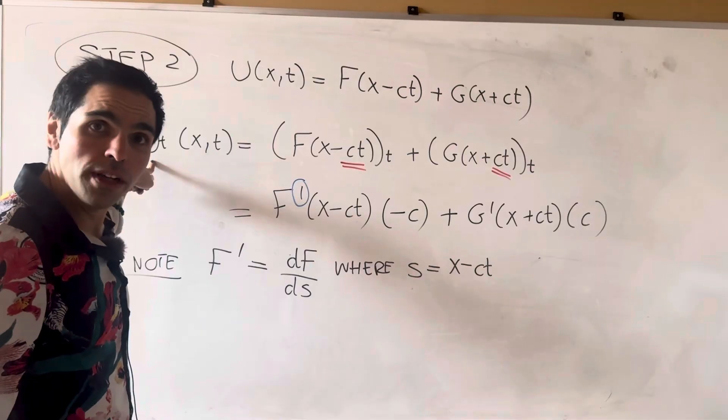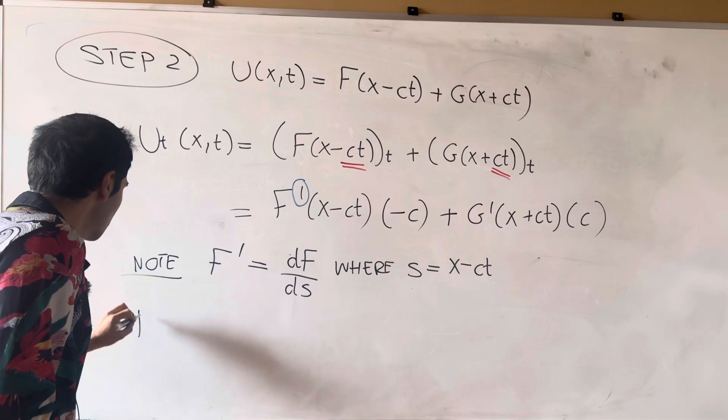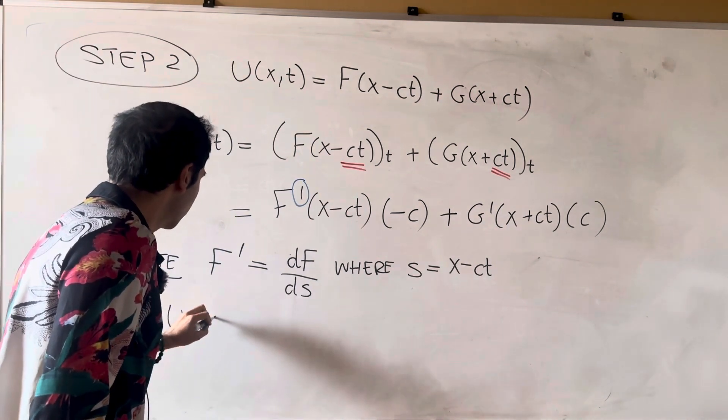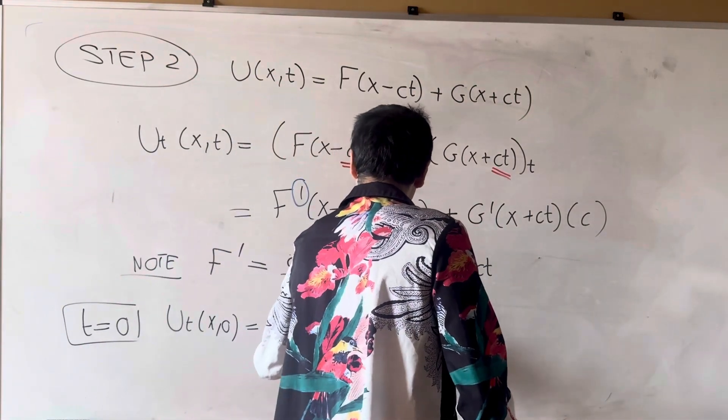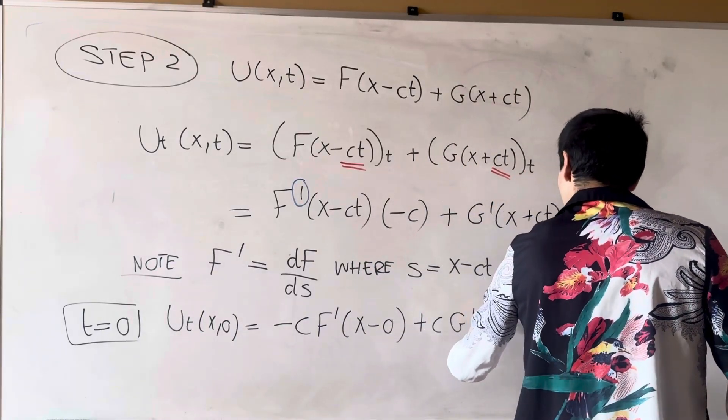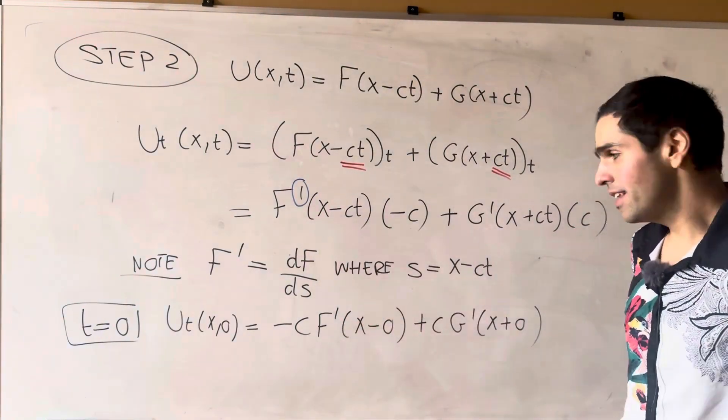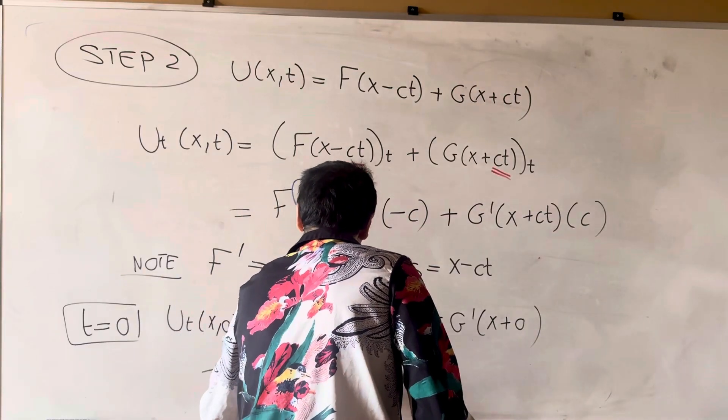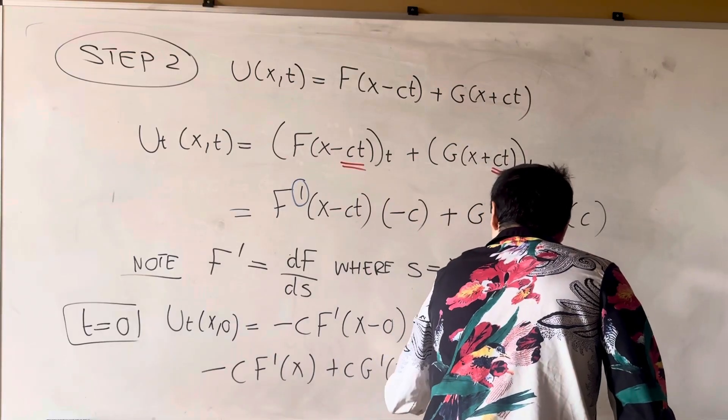But, now, all we need to do is plug in t equals zero. So, u_t of x,0 now becomes minus c f prime of x minus zero, plus c g prime of x plus zero, which ultimately gives us, minus c f prime of x plus c g prime of x equals psi of x.